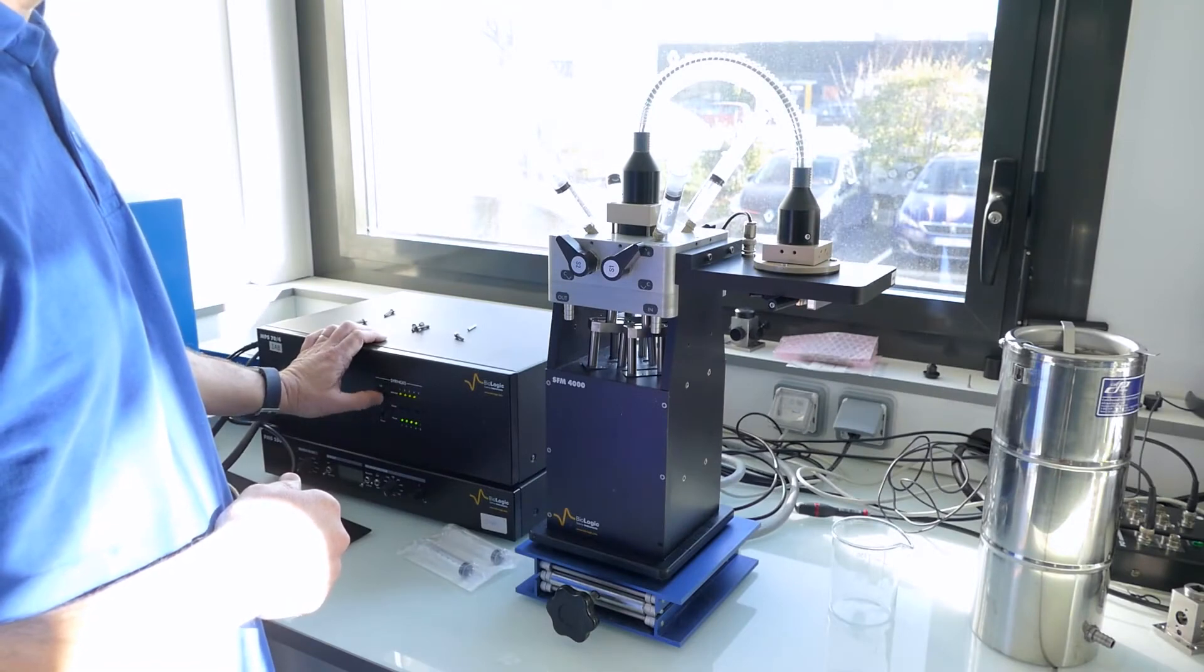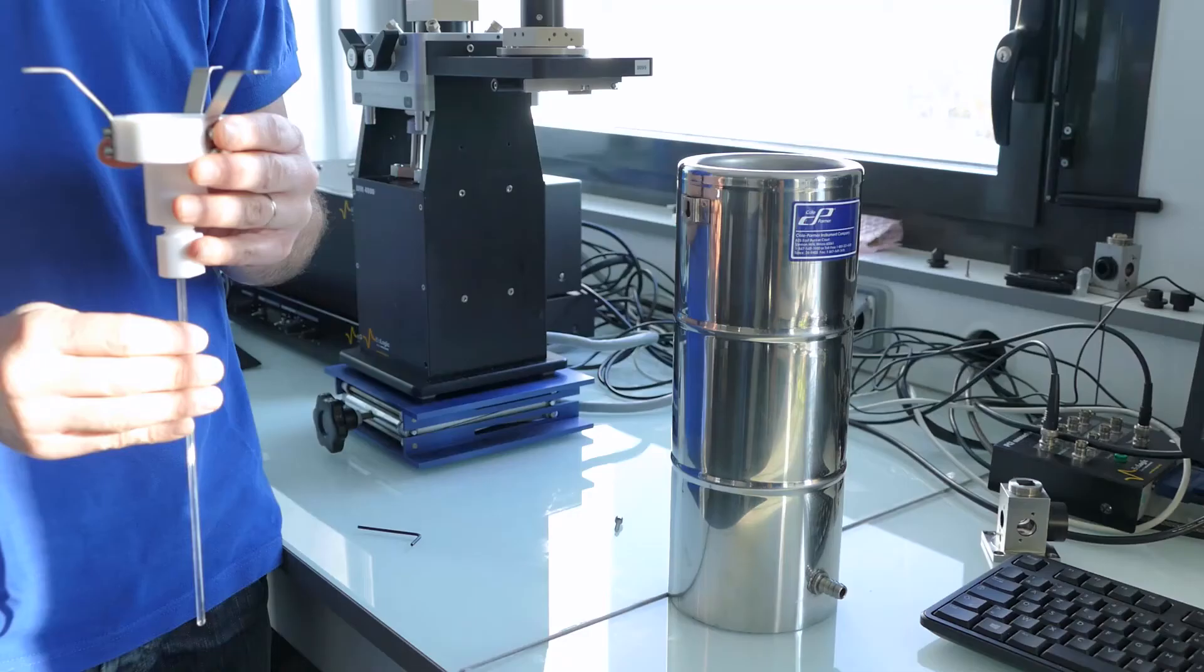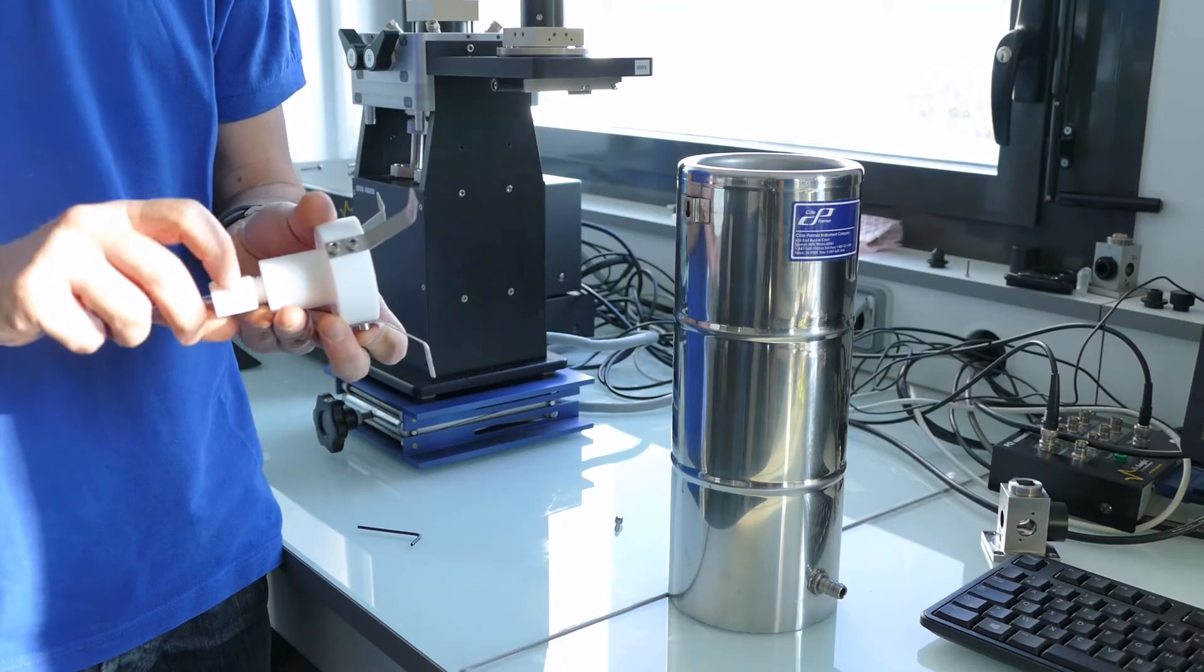Load solution in the SFM and remove air from the internal tubing. Install the EPR tube on the packing funnel.